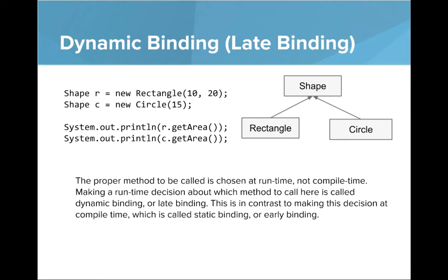And the way this is actually working is with something called dynamic binding or late binding. And so the proper method to be called is chosen at runtime, not compile time. Making a runtime decision about which method to call here is called dynamic binding or late binding. This is in contrast to making this decision at compile time which is called static binding or early binding. Remember runtime, that's when the program is actually running. Compile time is when we're checking does your program all work. And what this means is that when the program is running, we're making a sort of game time decision about what the proper getArea method to call is. You can see that the actual object is a rectangle, so we go and call the proper rectangle one or the proper circle getArea.